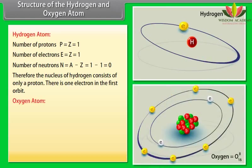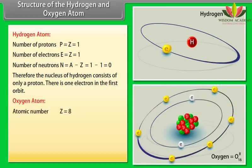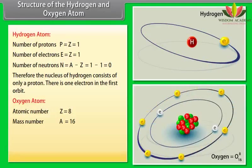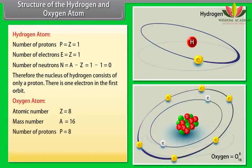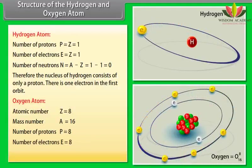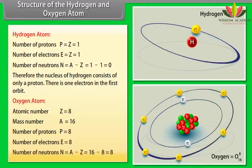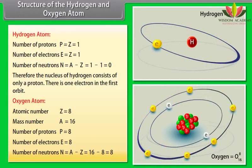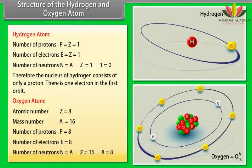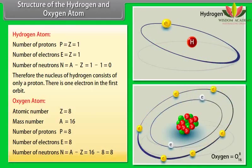Oxygen atom. Atomic number, Z is equal to 8. Mass number, A is equal to 16. Number of protons, P is equal to 8. Number of electrons, E is equal to 8. Number of neutrons, N is equal to A minus Z which equals 16 minus 8 which is equal to 8.